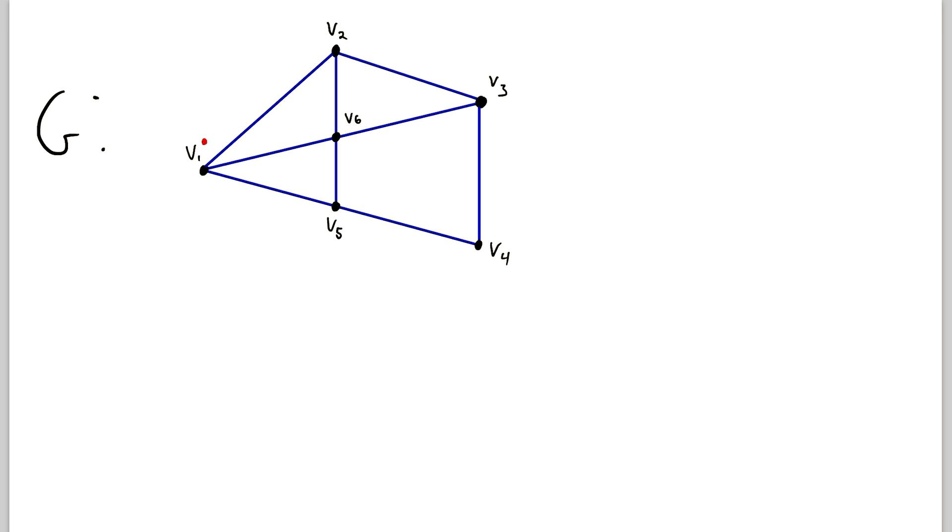So let's say we start at vertex 1. And then we go over here towards the middle to V6. Then we go down to V5. Then we come over here to V4. We go up to V3. Then we revisit V6. Then we go up to V2. And then we return to our starting position at V1.